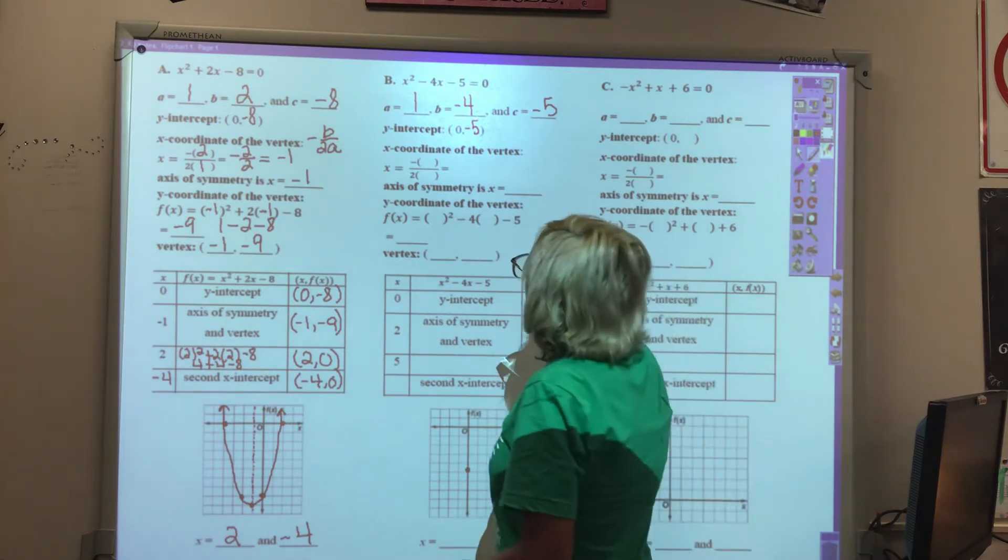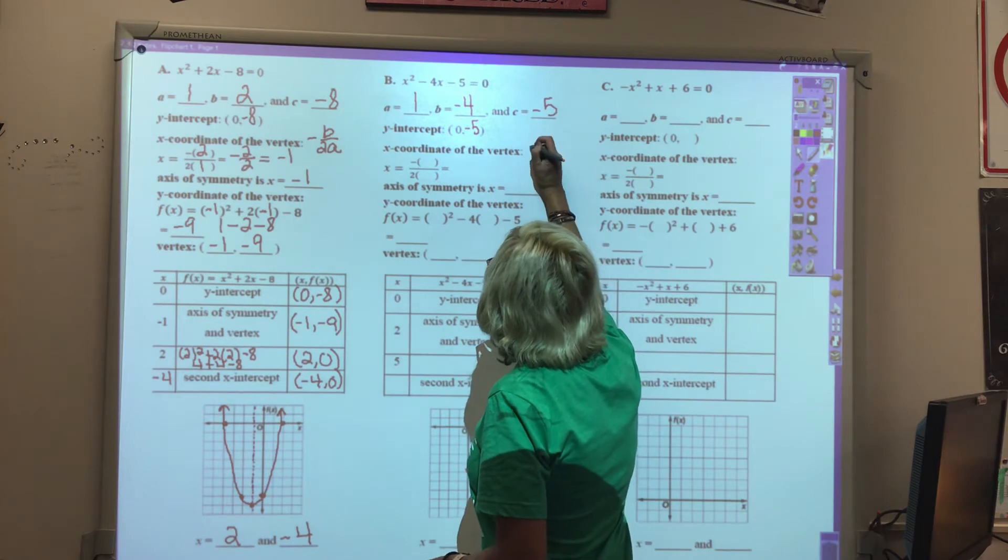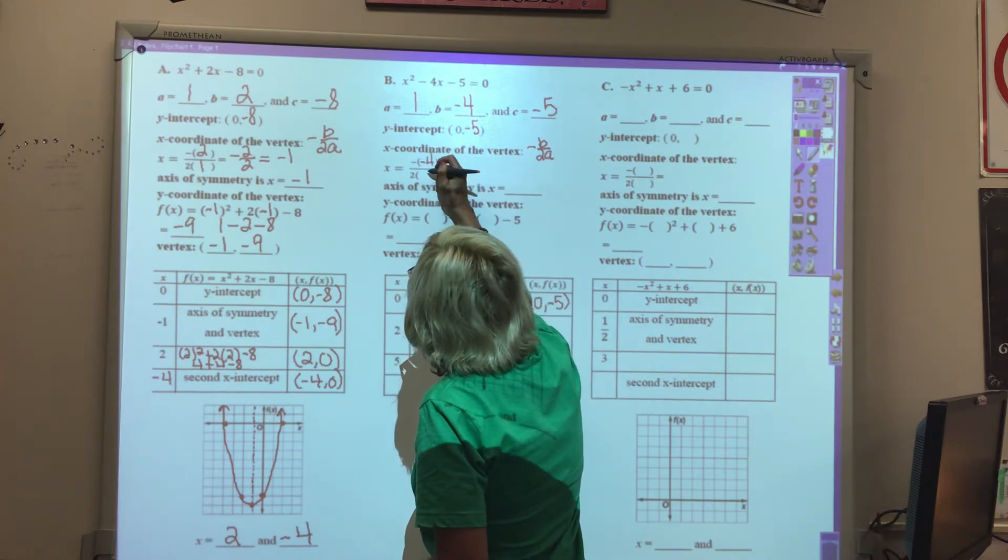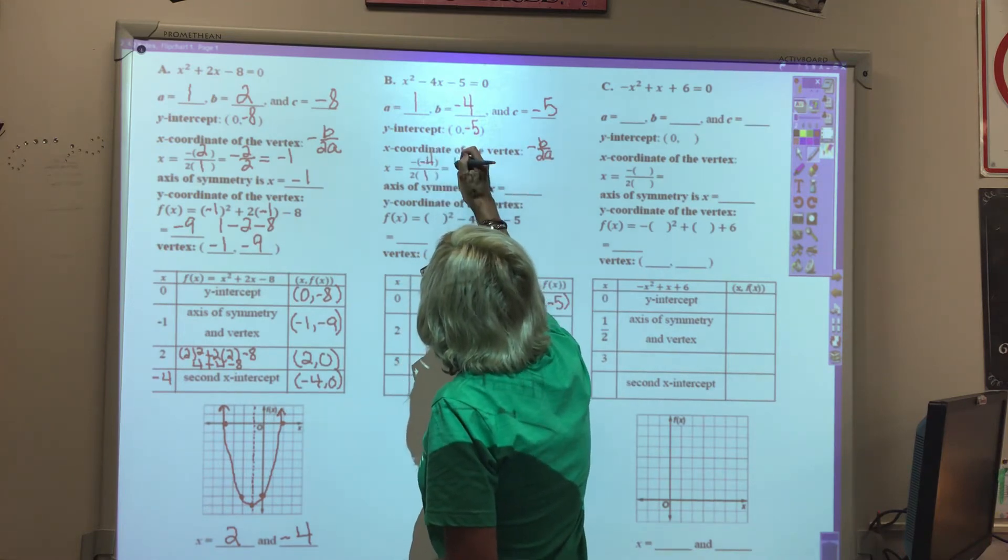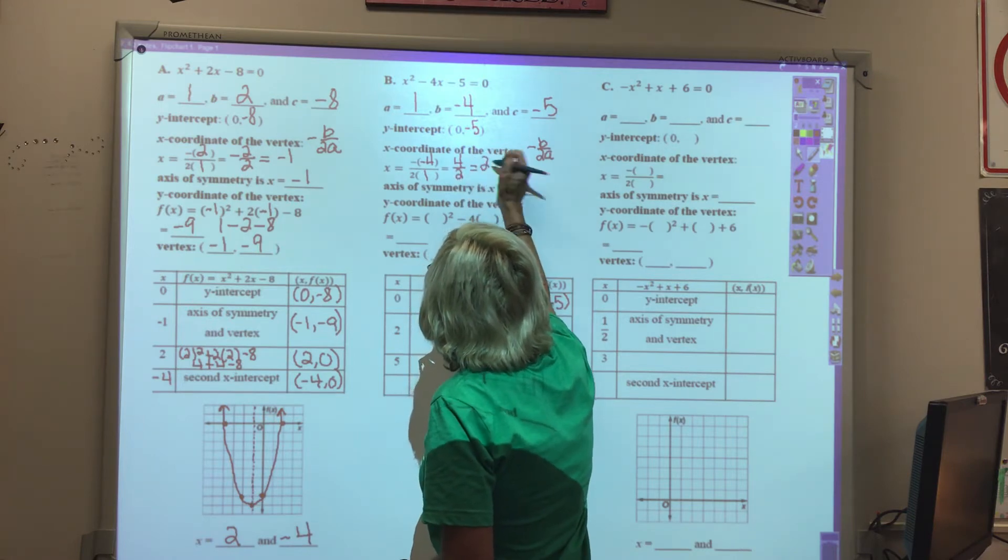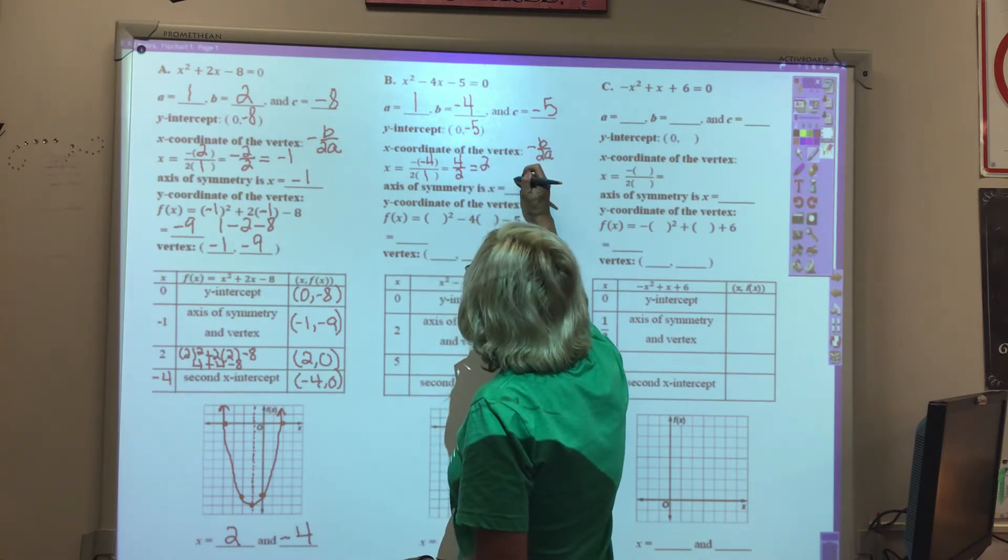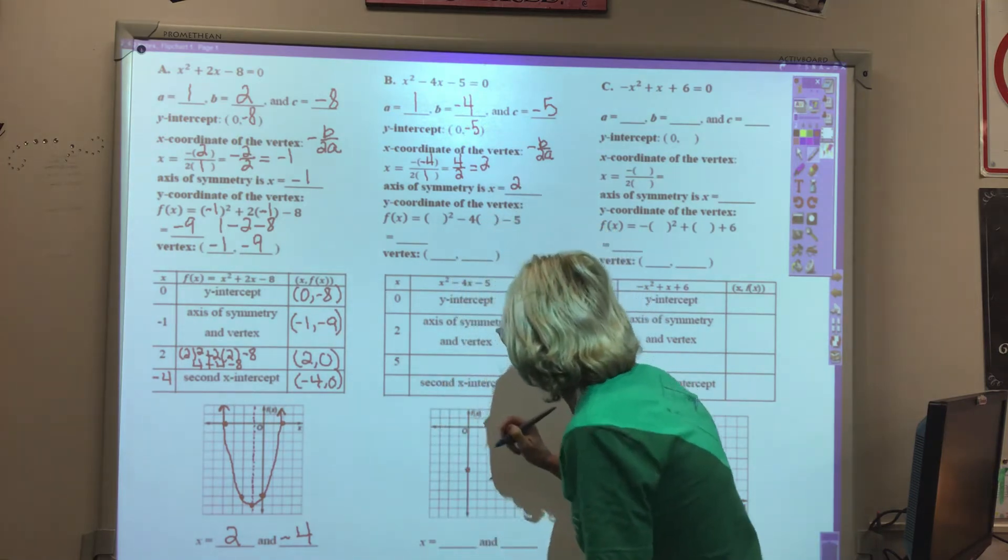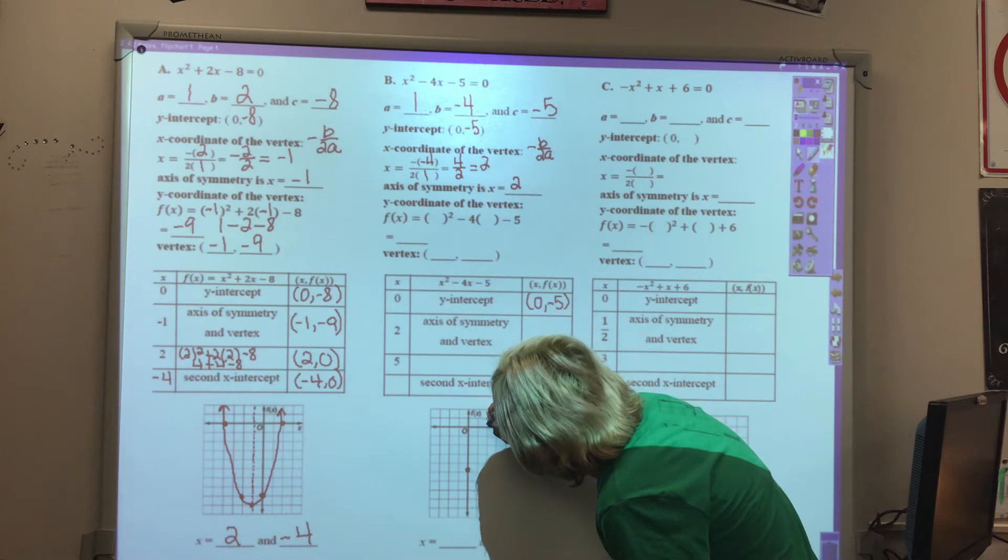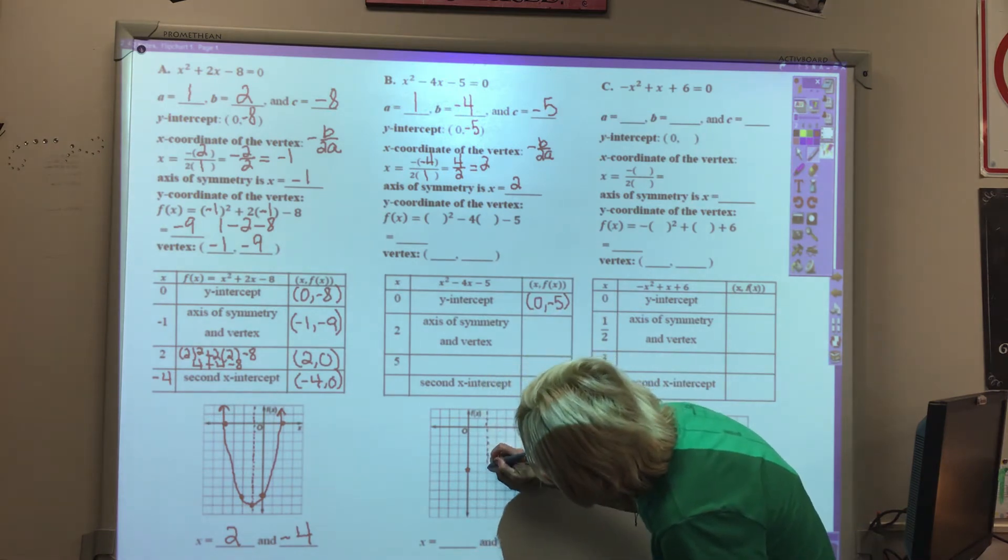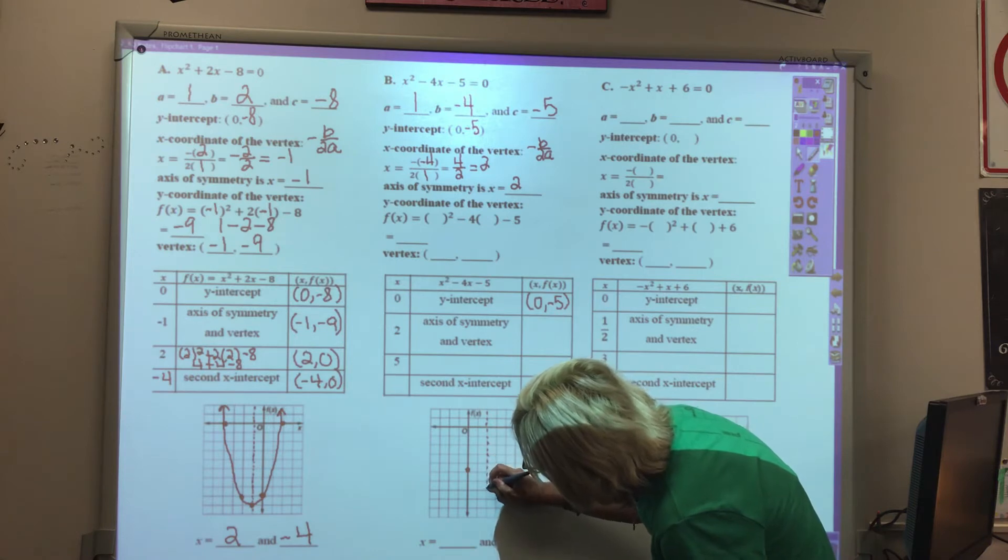Our axis of symmetry, again, it's the opposite of b over 2a. So the opposite of negative 4 over 2 times 1 would be 4 over 2, which equals 2. The axis of symmetry is x equals 2. That would be right here.